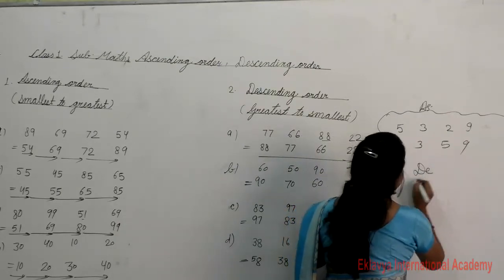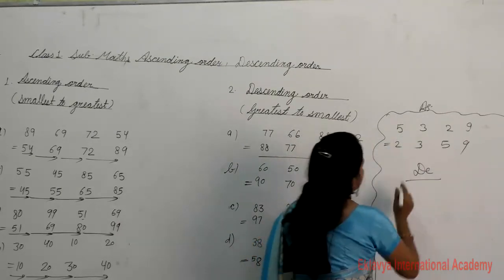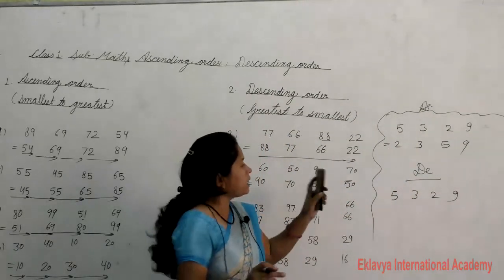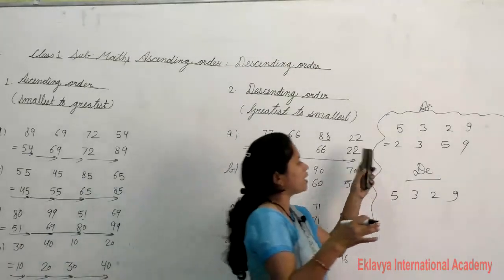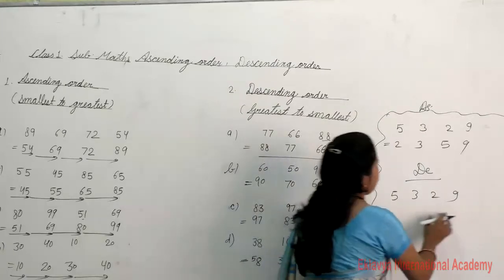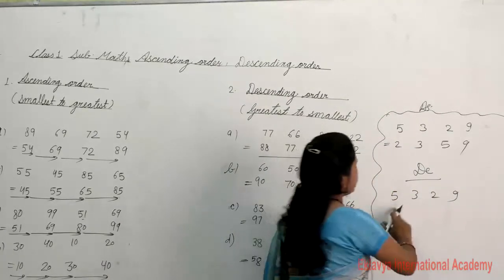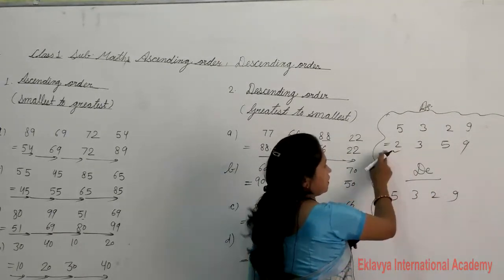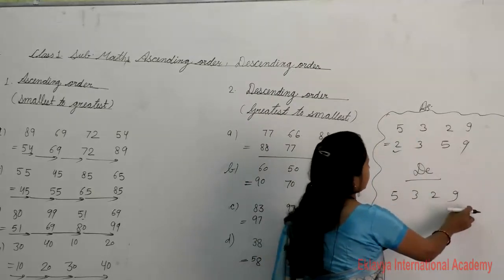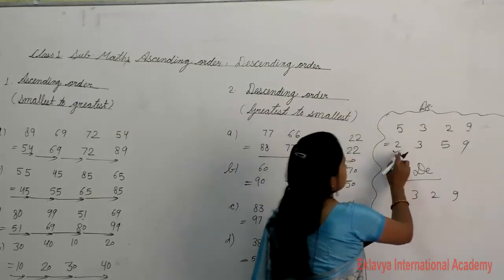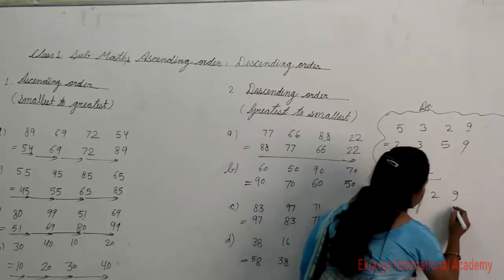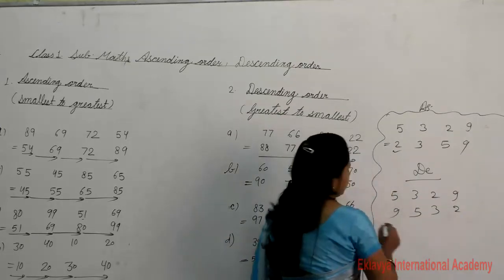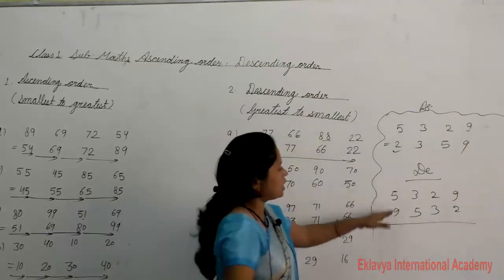Now for descending order using the same numbers: 5, 3, 2, 9. Here is a trick — if you are confused about descending order, first write the ascending order, then write it in reverse on the back side. So ascending is 2, 3, 5, 9 and descending order written in reverse is 9, 5, 3, 2.